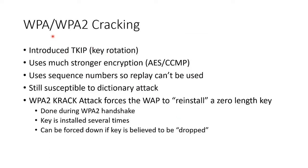Now we have WPA and WPA2. WPA introduced a key that constantly rotated from a master key, using a protocol called TKIP — the Temporal Key Interchange Protocol — which kept the key rotating so you wouldn't have much time to crack it. It also used much stronger encryption along with timestamps and digital signatures.